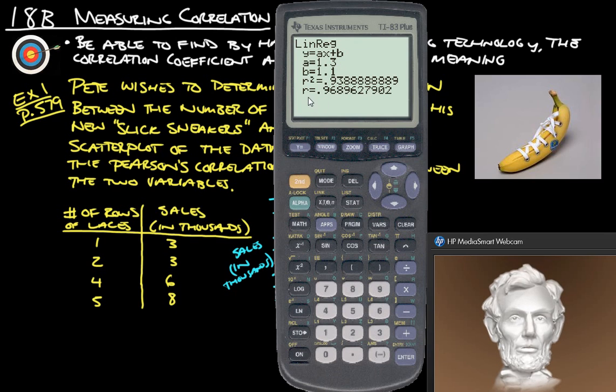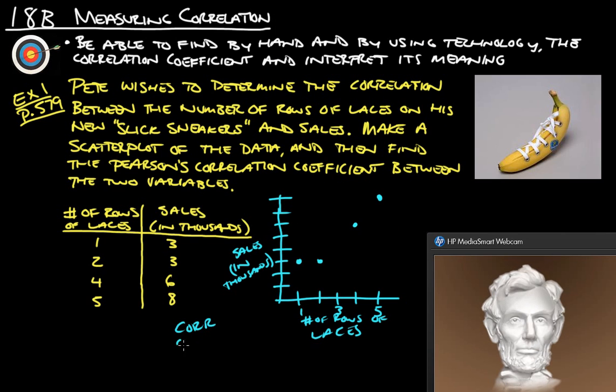So it's 1.3x plus 1.1 is the equation of the line. Now the correlation coefficient that we're looking for is the r. So it's 0.96, basically 0.97. So the correlation coefficient, which is r, is 0.97, which means it's a strong correlation.